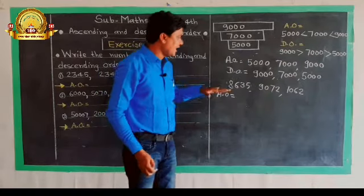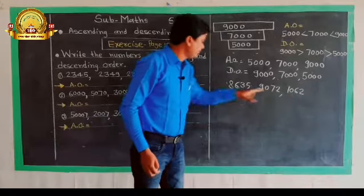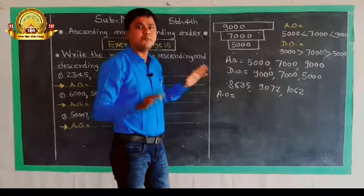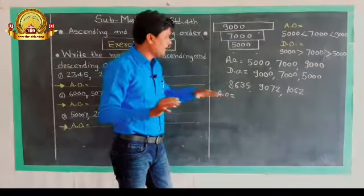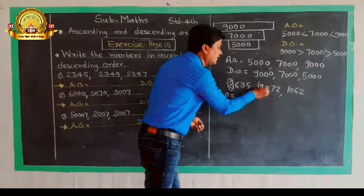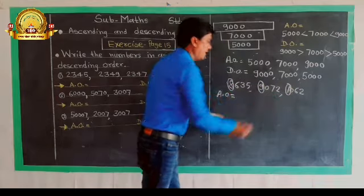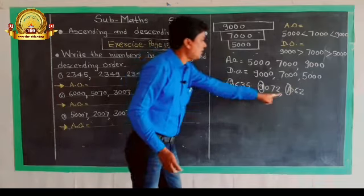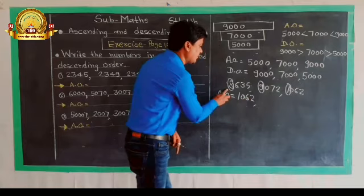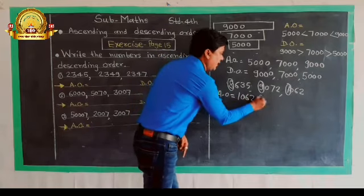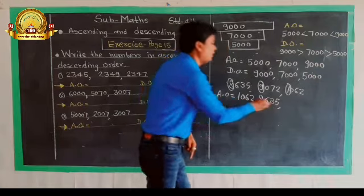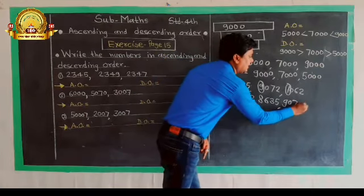For ascending order, I first look at the number of digits. These are 4-digit numbers. I compare the first digits: 8, 9, and 1. The smallest first digit is 1, so the smallest number is 1,062. Then comes 8,635, and the largest is 9,072. So the ascending order is: 1,062, then 8,635, then 9,072.